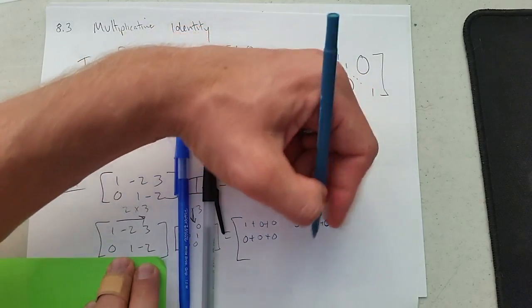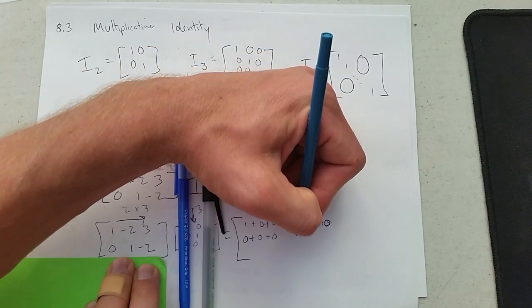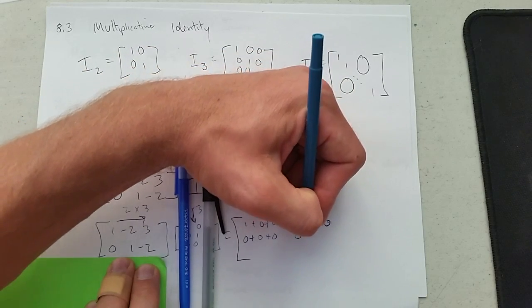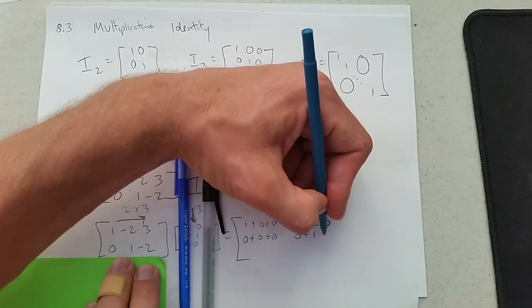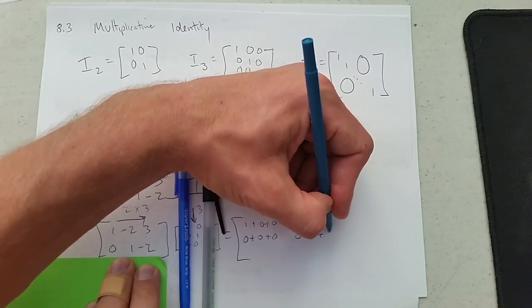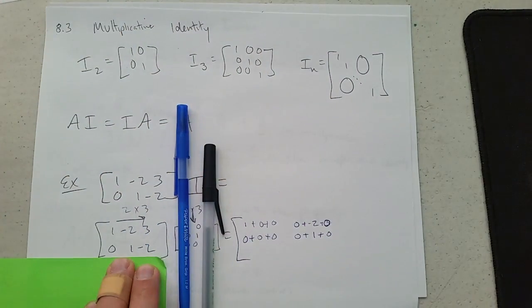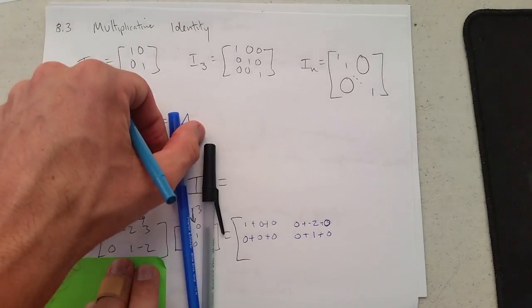Now row 2, same thing. You have 0, plus 1 times 1 is 1, plus 0 times negative 2 is 0. So that was everything in column 2. Now we're going to go over to column 3.